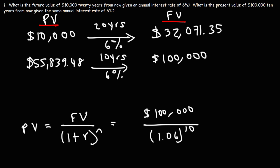So let's say that inflation is 6%. The value of all goods increases by an average of 6%. $55,839.48 has the same purchasing power as $100,000 10 years later.